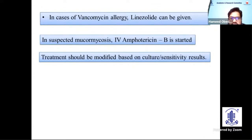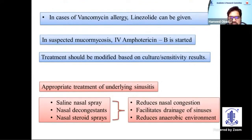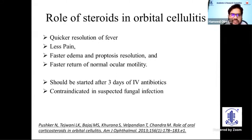Treatment should be modified based on culture and sensitivity results. Appropriate treatment of underlying sinusitis is very important — saline nasal sprays, nasal decongestants, and nasal steroid sprays reduce nasal congestion, facilitate sinus drainage, and reduce the anaerobic environment within the sinuses. The role of steroids is still controversial, but they provide quicker resolution of fever, less pain, faster edema and proptosis resolution, and faster return of normal ocular motility. They should be started three days after IV antibiotics once improvement is seen, and are contraindicated in suspected fungal cellulitis.